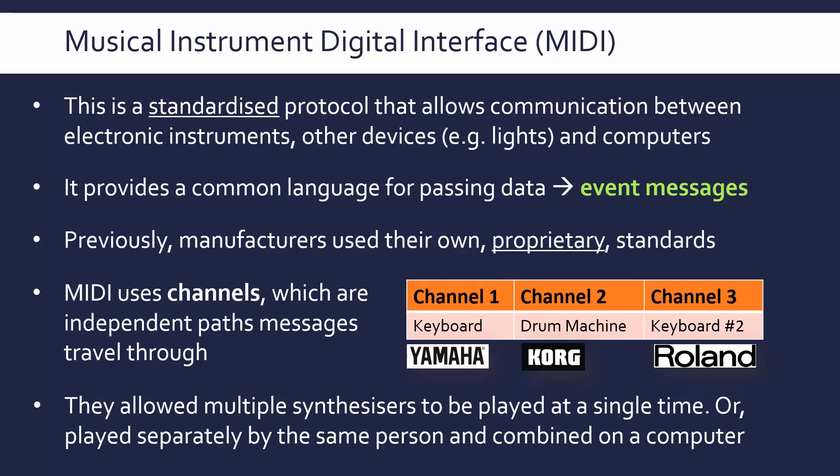Crucially, MIDI enables a musician to play the first keyboard at one time, then add a drum machine later, then add a second keyboard after that, and then combine each channel on a computer to make the actual music. MIDI was invented in the early 80s, which makes sense when you think about how distinctive 80s music is — especially dance music with loads of layers, because MIDI enabled musicians to record different channels independently and layer different sounds. It wouldn't really have been possible before MIDI, or at least it would have been much harder.